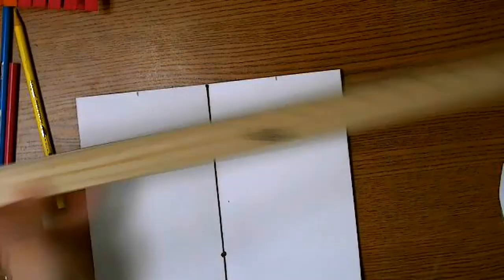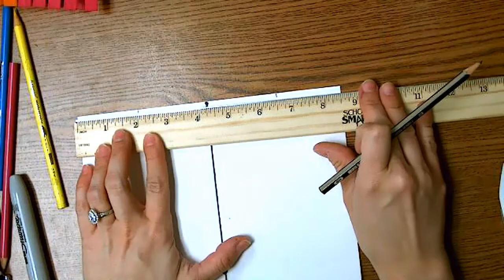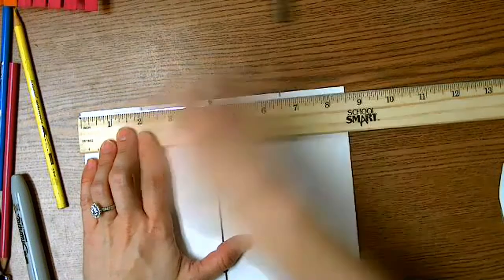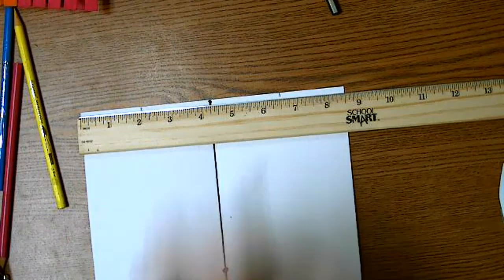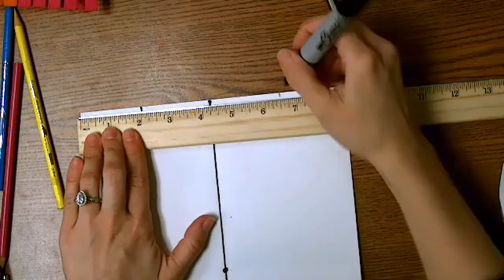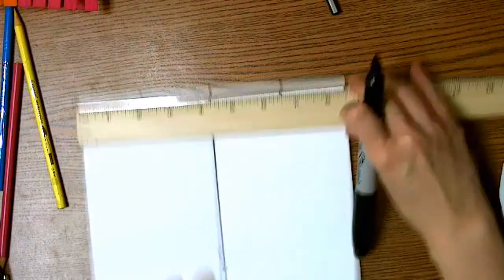Now I'm going to use my ruler and I'm going to line it up at the top of the page when it's facing vertically. And I'm going to make a mark at two and six and a half. So make a little dash at two and one at six and a half. They should be touching the top of the page.